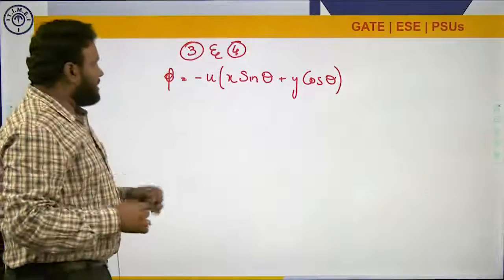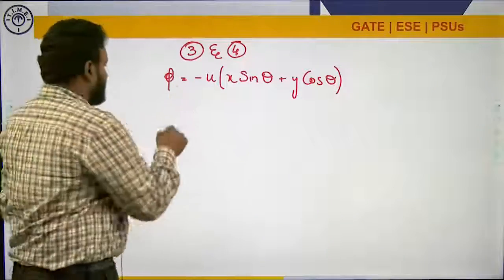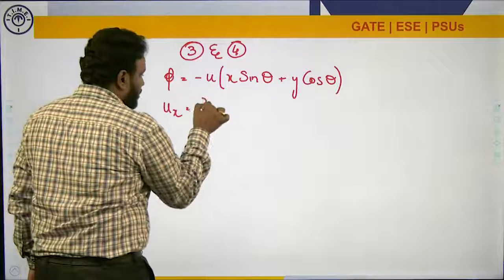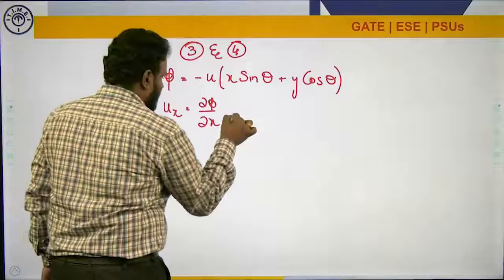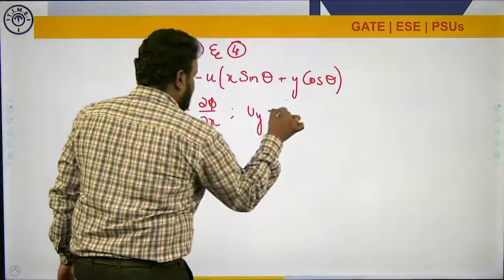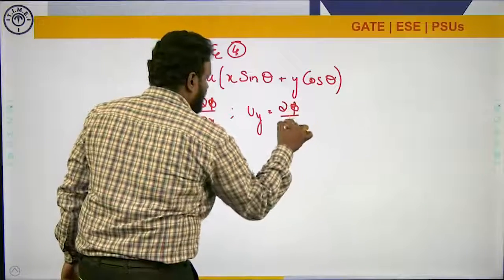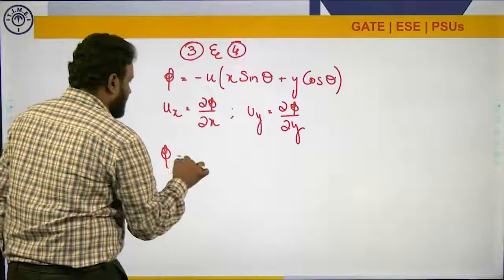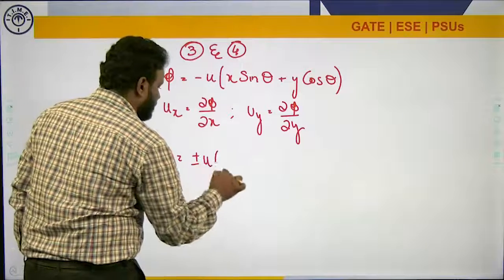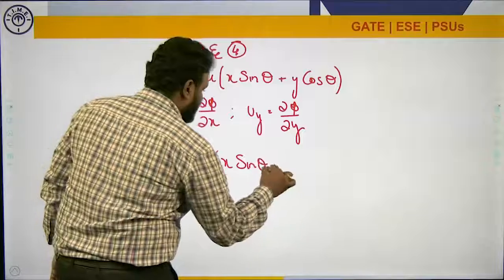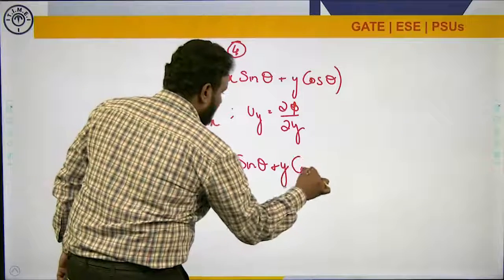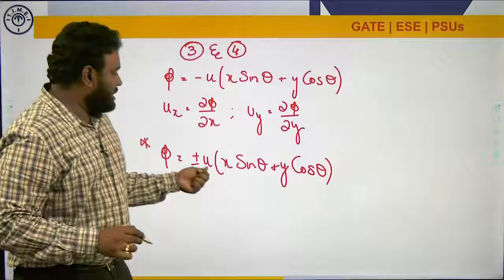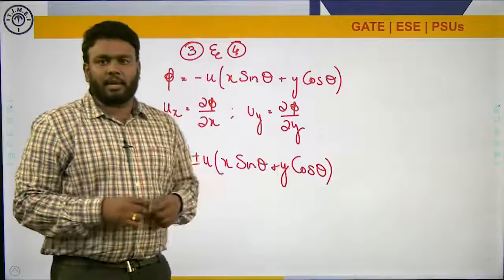In the options it is given as plus or minus u(x sinθ + y cosθ), because you can write the velocity potential relations as ux = ∂φ/∂x and uy = ∂φ/∂y. So the final answer for the above question is φ = ±u(x sinθ + y cosθ).